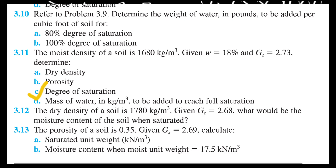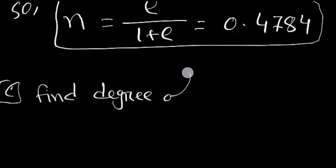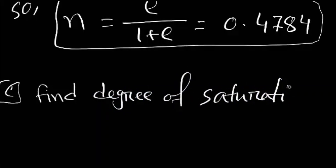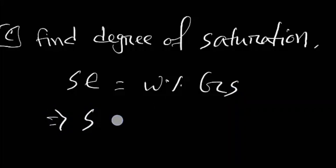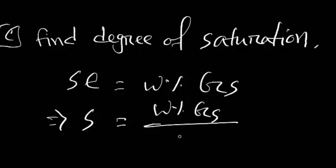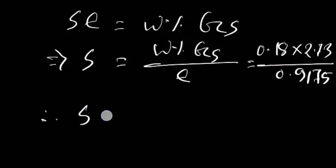The next question is to find degree of saturation. We know S·e equals moisture content into specific gravity, or saturation equals moisture content into specific gravity over void ratio. So saturation equals 0.18 into 2.73 over 0.9175, giving degree of saturation equals 0.5355.